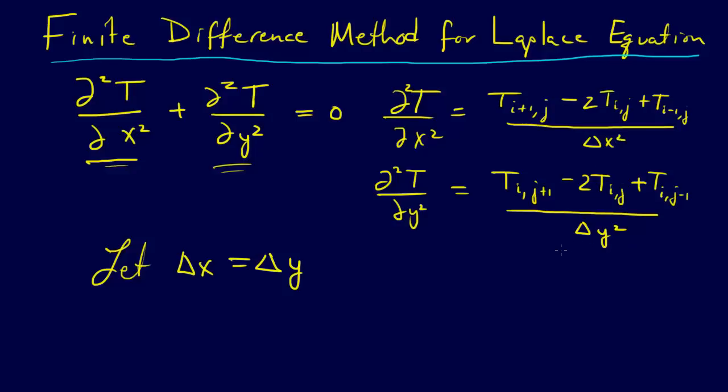And then what we get when we simplify that out is that we have T_{i+1,j} plus T_{i-1,j} plus T_{i,j+1} plus T_{i,j-1}. Let's see, 1, 2, 3, 4, plus - so that's it.